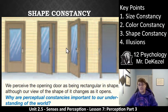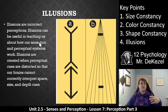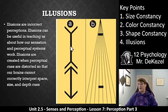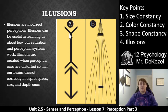That brings us to illusions. Illusions are incorrect perceptions, and they can be useful in teaching us how our sensations and perceptual systems work. When we look at these lines, one line looks longer than the other even though they're exactly the same. Illusions are created when perceptual cues are distorted so our brains cannot correctly interpret space, size, and depth cues. This line looks longer because it has extensions going outward, while this line looks shorter because it has contractions, but they are exactly the same length.